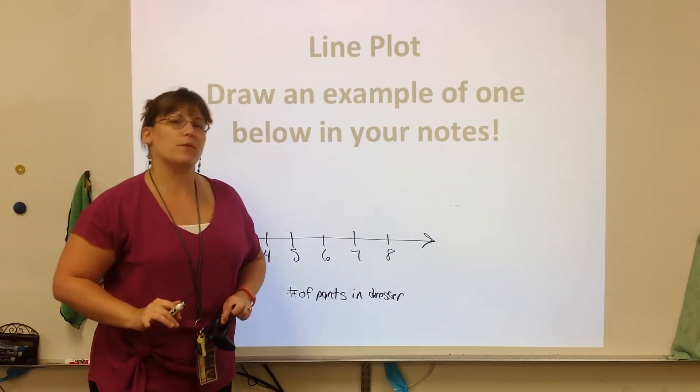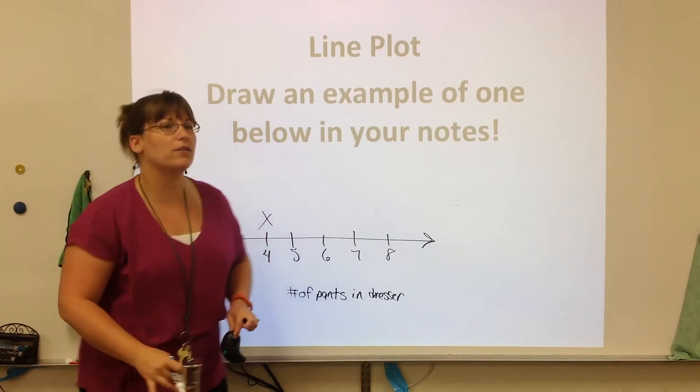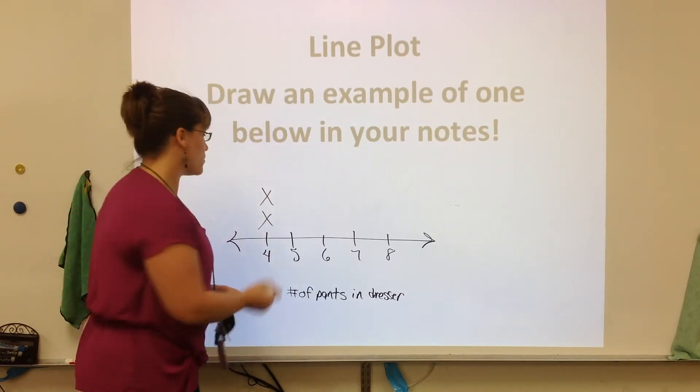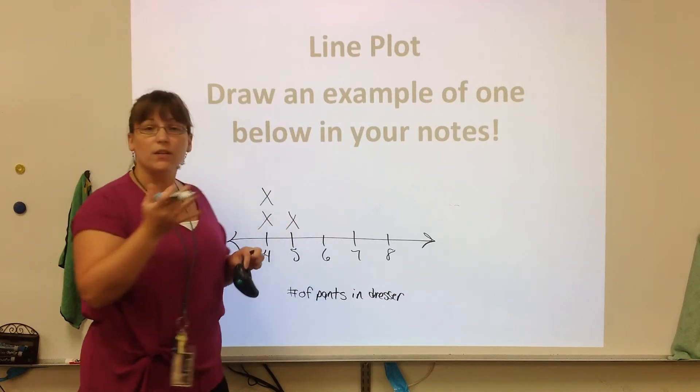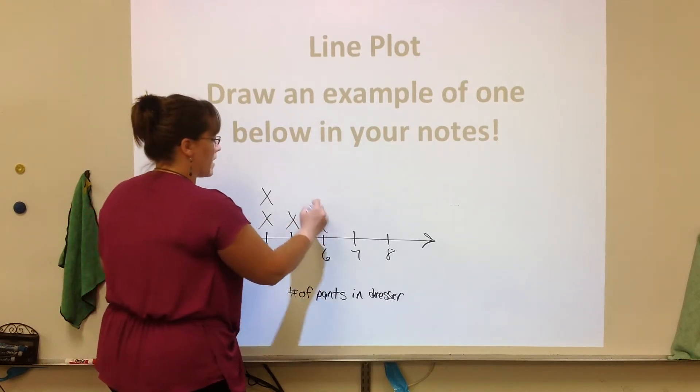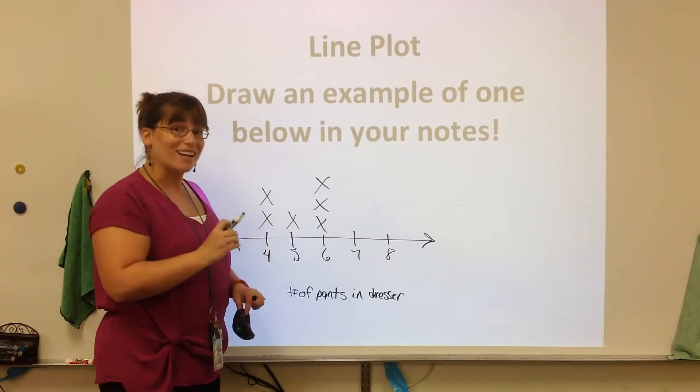So what we're going to do is we're going to create our line plot by putting numbers on the bottom. We're going to start with 4, and we'll stop at 8. And then we're going to put our data on the line plot. Each person who answers, oh, I got four pair of pants, so they get an x. Another person answers, oh, I also have four, so they get the second x. And it goes on from there. So say we asked some people, some people had four, some people had five. Three people we asked have six.